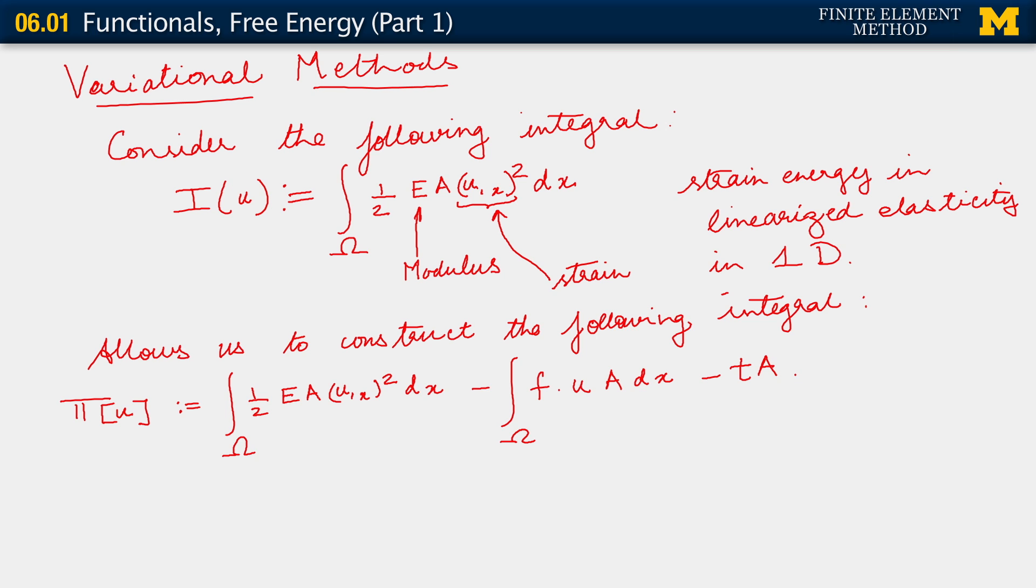So T A would be the force that makes up the traction. That multiplied by u at the position L. So I want us to consider this integral where we're seeing, as we did for the strong form of the problem, that u belongs to the space S. Our usual space of functions for the exact solution, the space of functions from which we draw the exact solution.